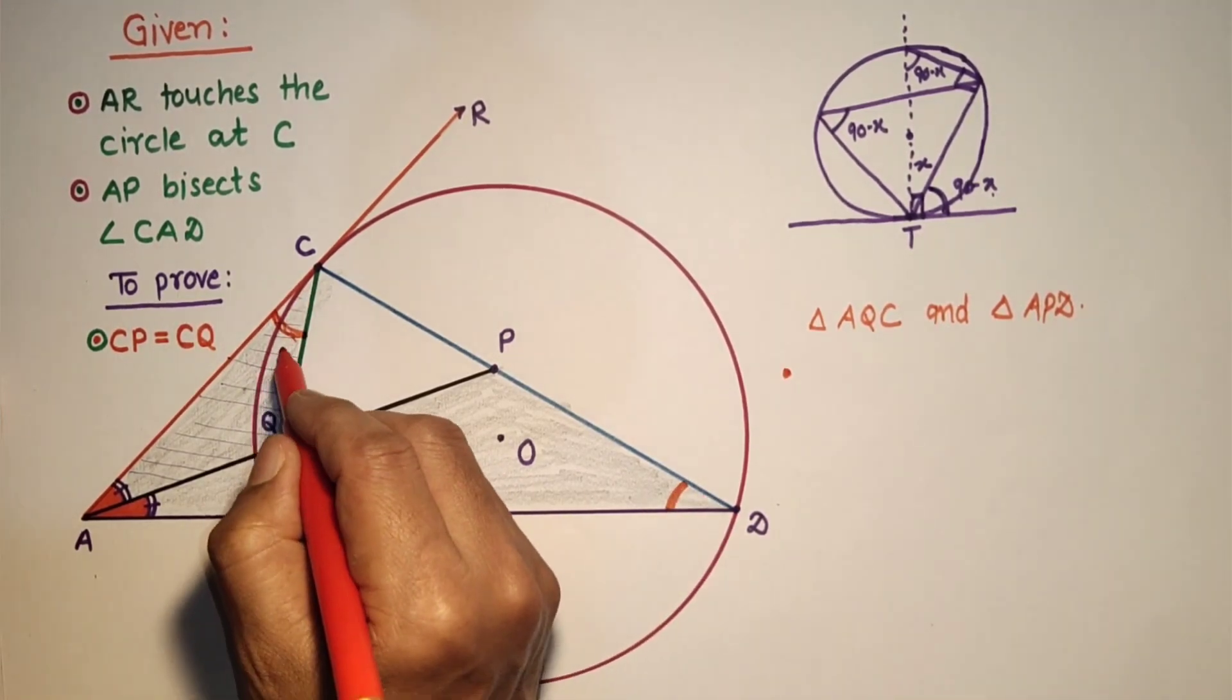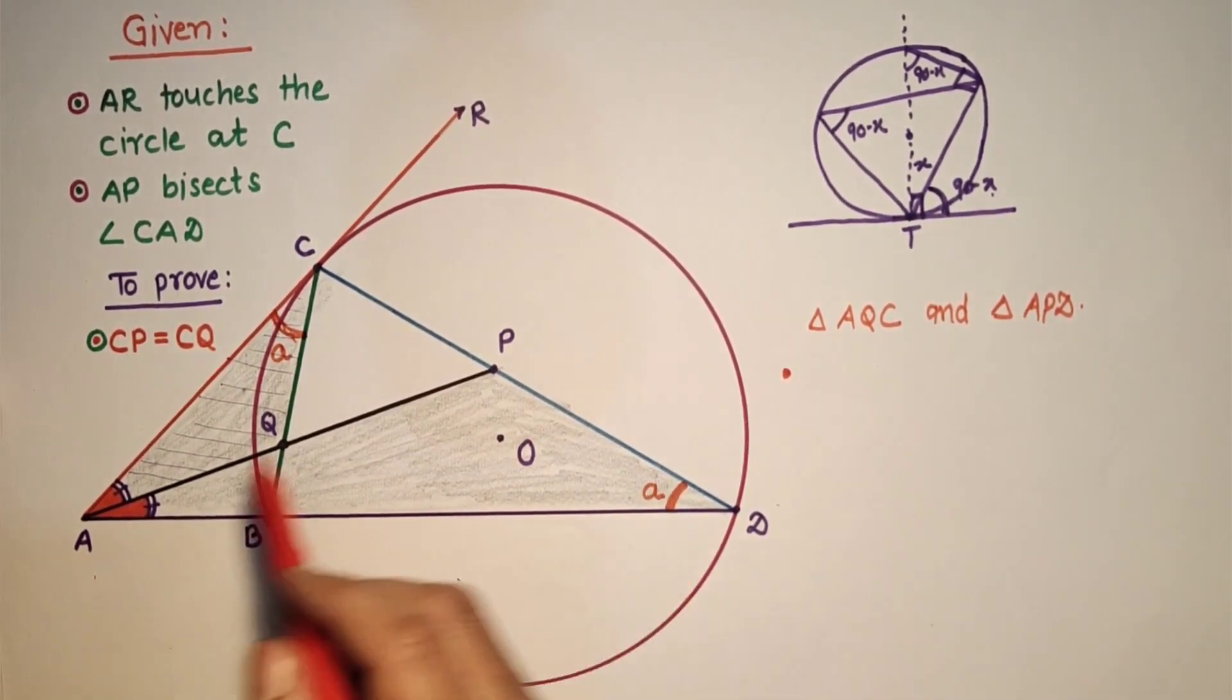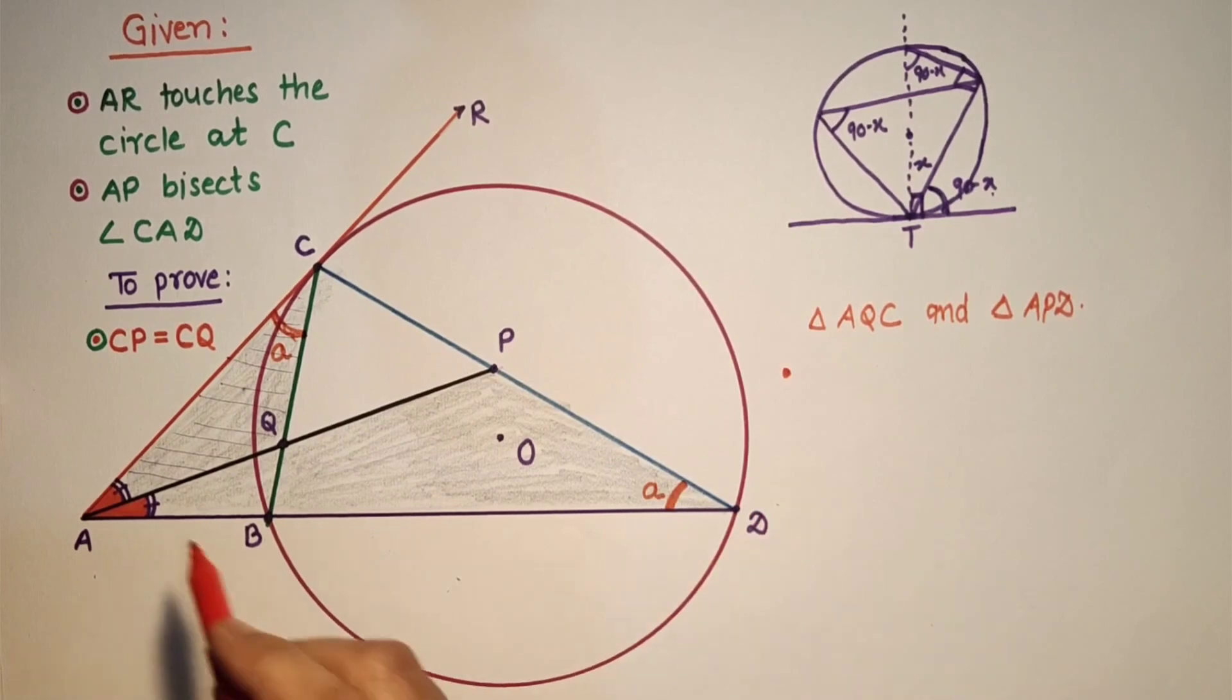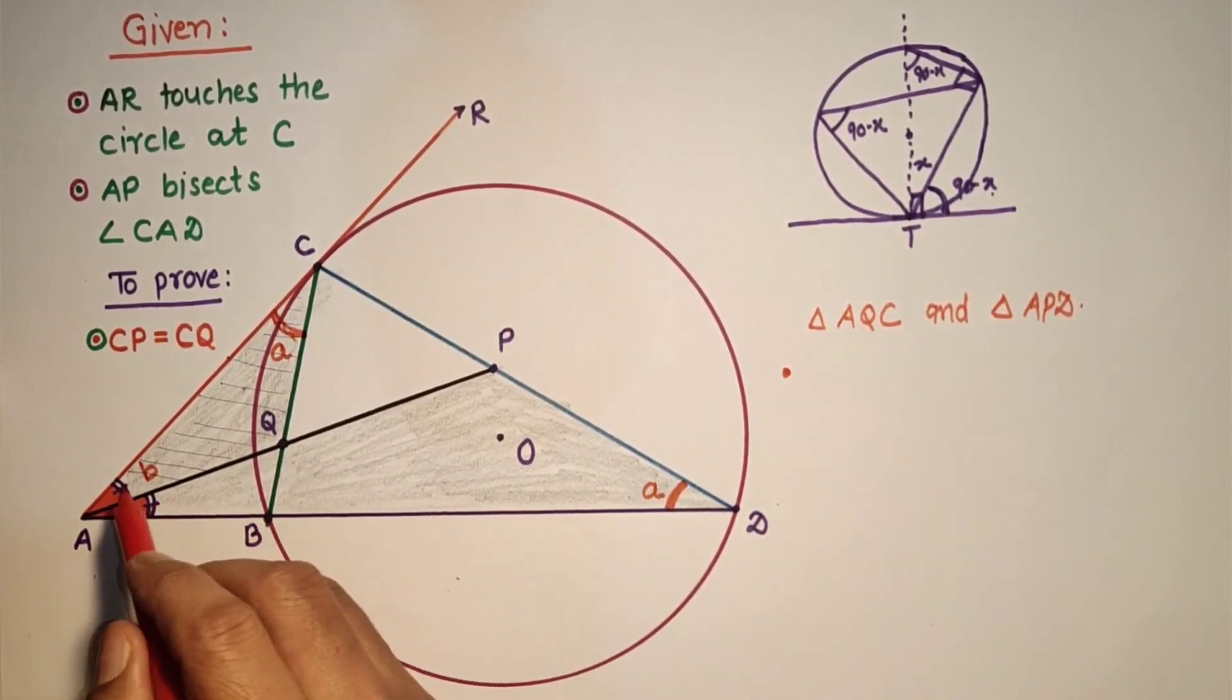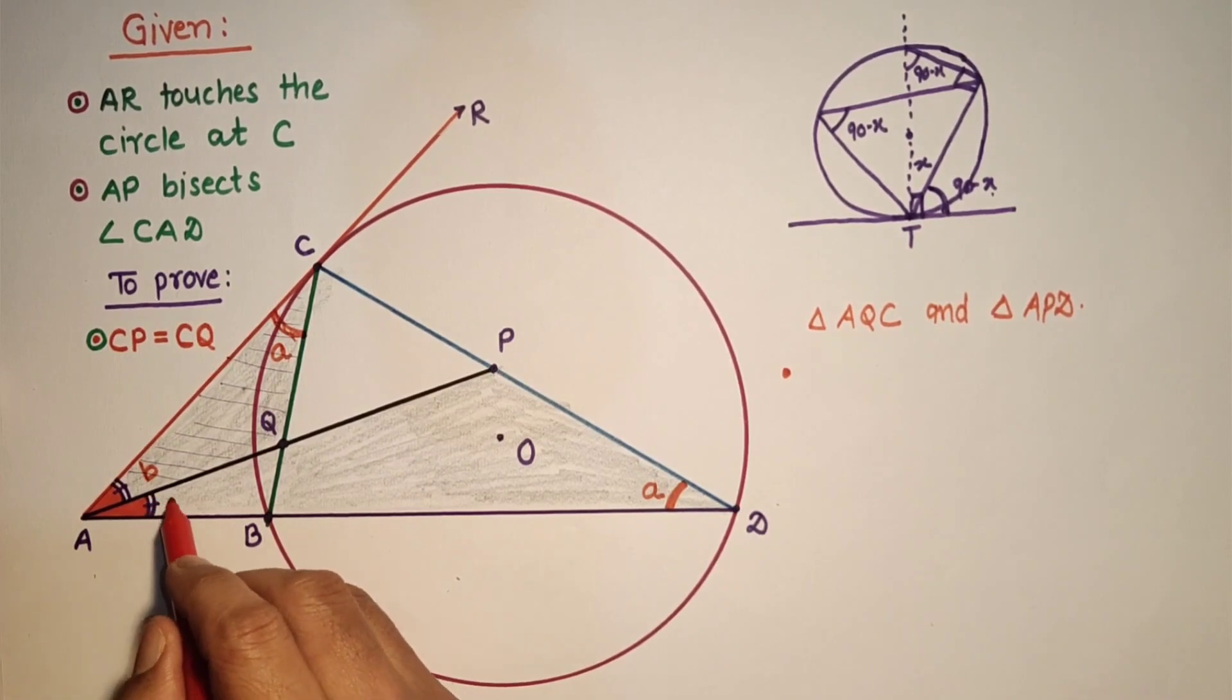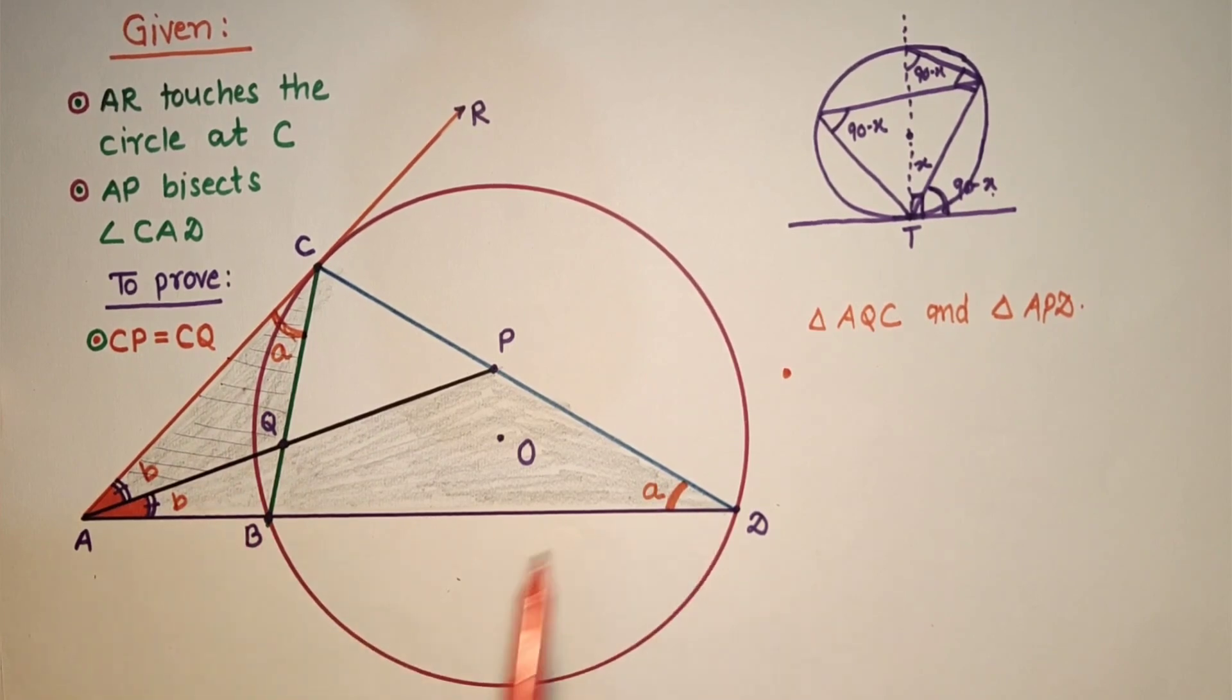So if this is A, this angle is A, this will also be A. And since AP bisects the angle CAD, so this part, let us suppose this is B, so this will also be B. So these two triangles are similar.